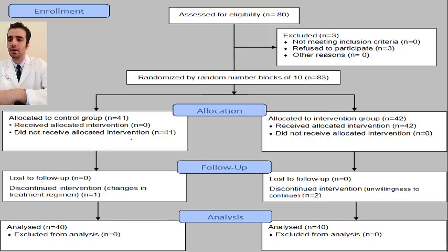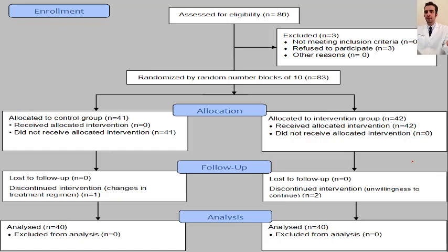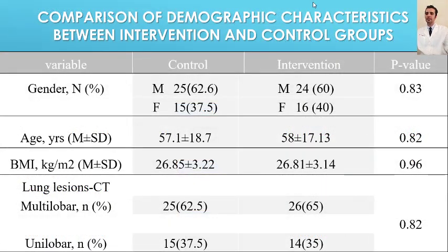Both groups received the same drug treatment regimen determined by the relevant medical team and the announced flow chart of the Iranian Ministry of Health. There was no statistically significant difference in demographic characteristics including sex, age, body mass index, and extent of pulmonary involvement on CT scan between the groups, as shown in the table.